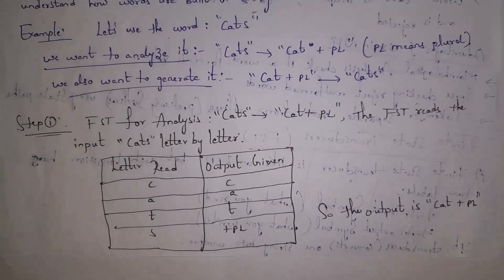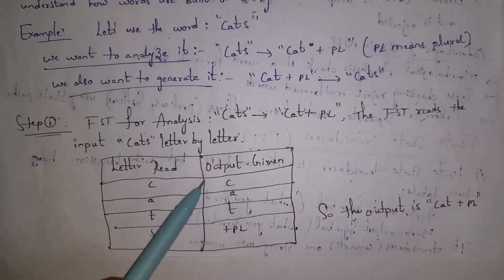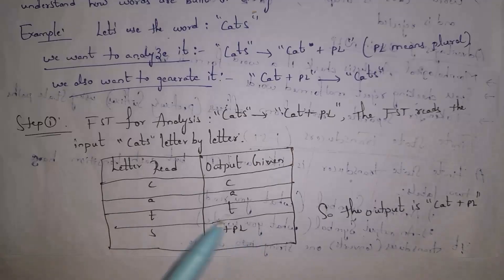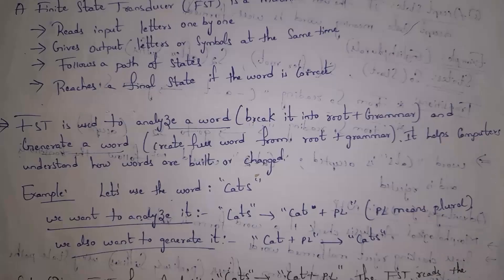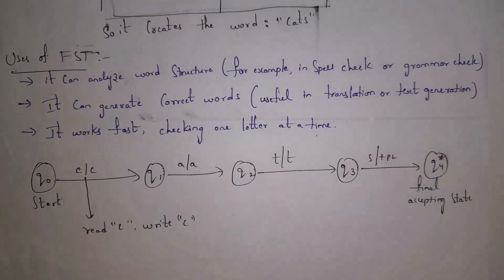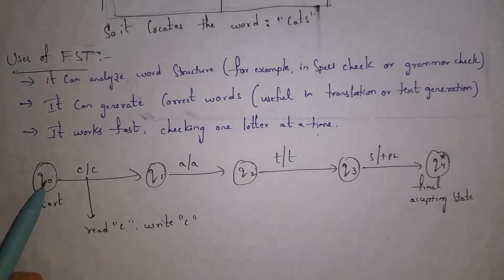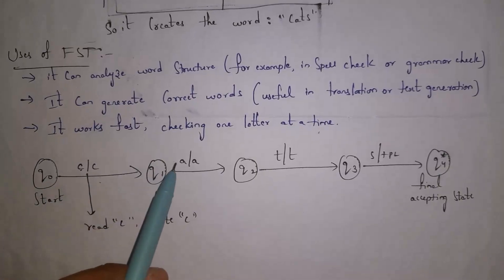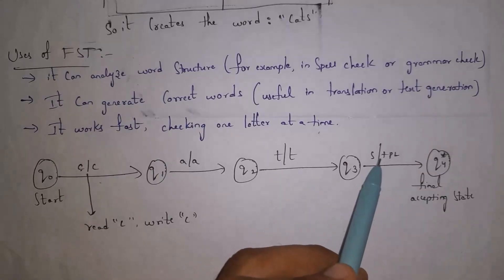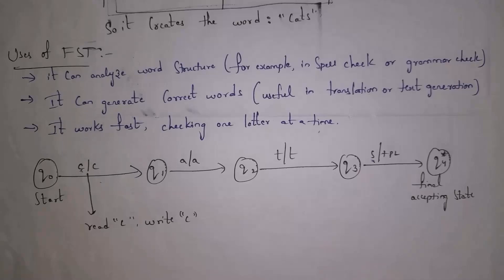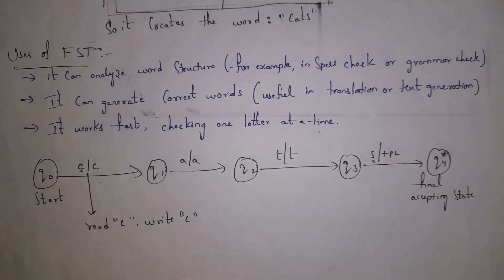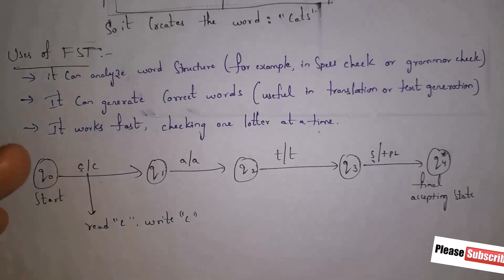FSTs can also generate words — the reverse operation. When I give 'cat + plural form', the model generates 'cats' by replacing 'plural' with 's'. This is shown in the finite state diagram: q0 is the start state. It reads 'c' and generates 'c', reads 'a' and generates 'a', reads 't' and generates 't', then reads 's' and generates the plural form. Since all characters are correct, the final state is an accepting state. The uses of FSTs include analyzing word structure, generating correct word forms, and working fast by checking letters one by one.